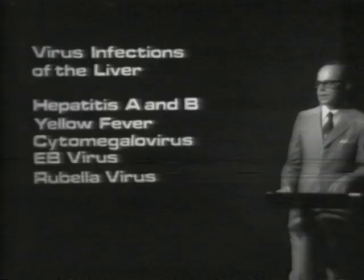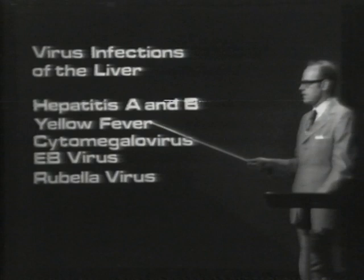Viral hepatitis is defined as acute inflammation of the liver, which is caused by a number of different viruses. The most important causes are Hepatitis A and Hepatitis B, which are distinct both epidemiologically and immunologically, but a number of other viruses are also implicated in hepatitis.